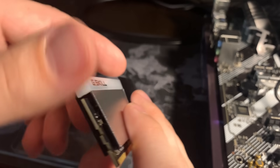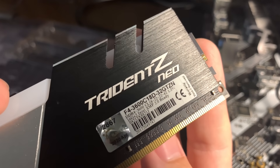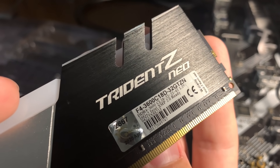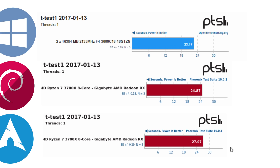Lastly, we ran TTest1, a basic memory allocator benchmark measured in time — lower is better. Windows 10 came in first at 23.2 seconds, followed closely by Debian at 24.9 seconds, and Arch lagged slightly behind at 27.1 seconds.